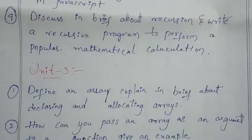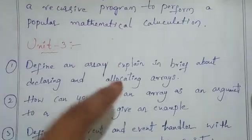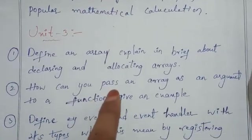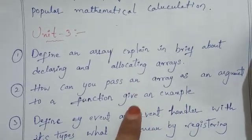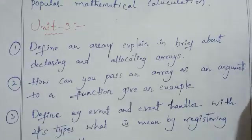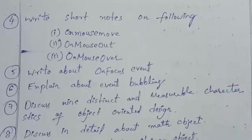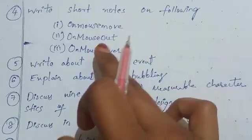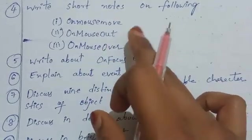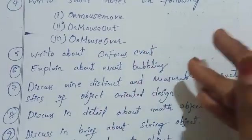So recursion is a fine question. Unit 3 is about arrays. First question: define an array, explain in brief about declaring and allocating arrays. Second question is about passing an array as argument to a function with an example. Third question is about event handler and its types. Fourth question is about on-mouse move, on-mouse out and on-mouse over - basically mouse movement.